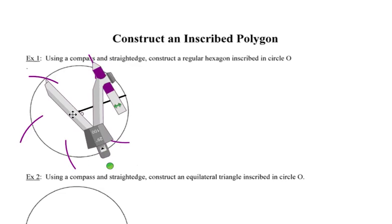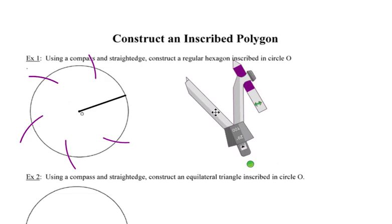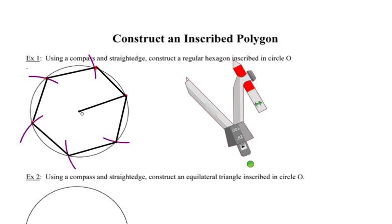We'll talk more about why this creates a regular hexagon when you come back to class — it's something you might want to think about right now. As a hint, it has to do with triangles. Once I've got the six vertices of that hexagon, I'm going to use my straight edge to connect those six points, which will give me a regular hexagon. This is an interesting and fun construction — very easy, simplistic, and neat.